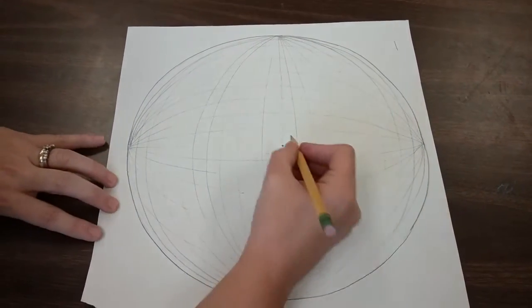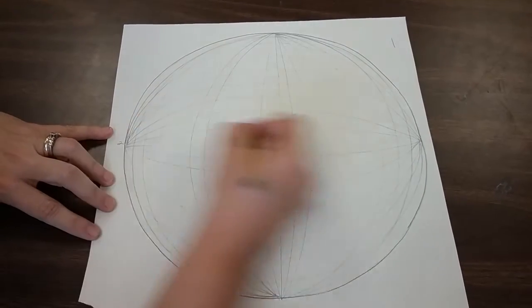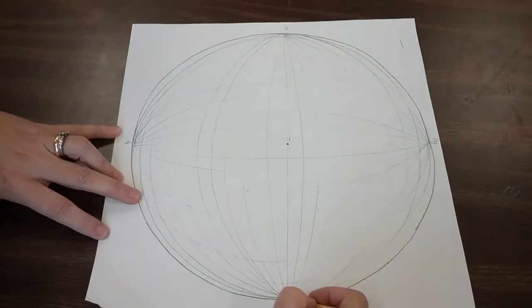So then what you're going to do is you can label them. So this is five-point vanishing, so you have one, two, three, four, and five.